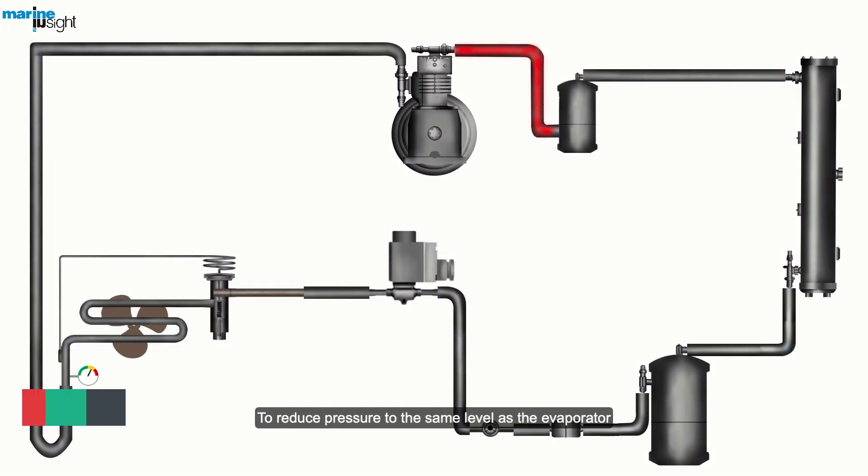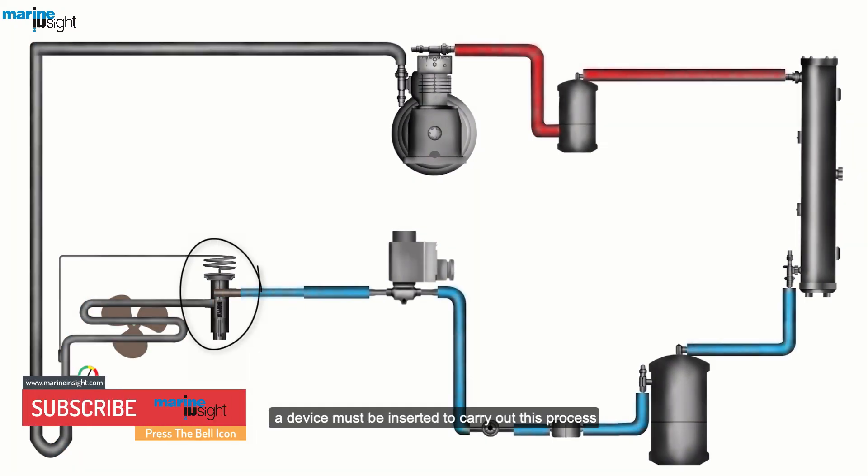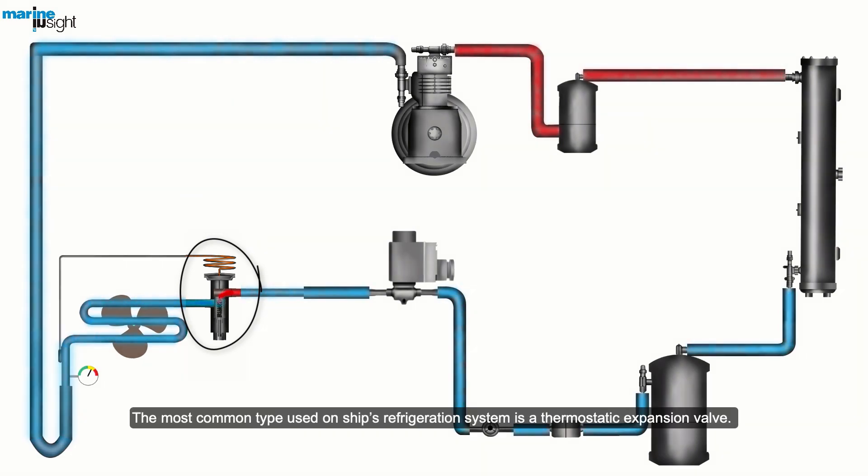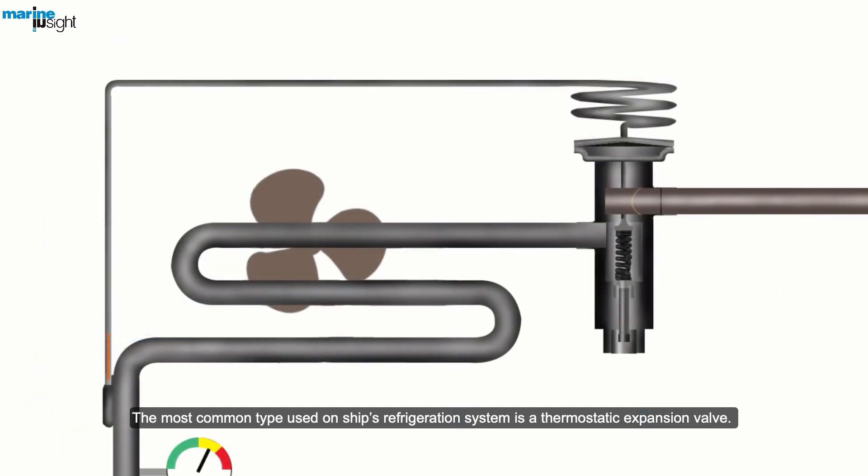To reduce pressure to the same level as the evaporator, a device must be inserted to carry out this process, which is called throttling or expansion. This device is a throttling or expansion valve. The most common type used on ships refrigeration system is a thermostatic expansion valve.